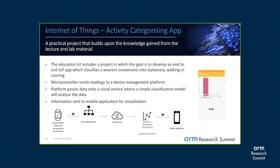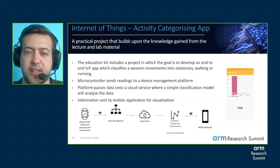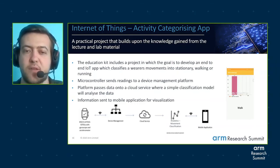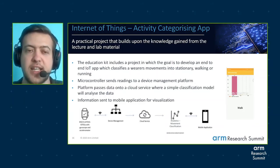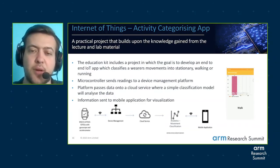One of the best parts of the kit is a hands-on lab that looks into developing an end-to-end IoT system, from a development board all the way to a mobile application. The app is designed to categorize activities such as walking, running, or being stationary. The development board monitors movement and sends this data to a device management platform. From there it is sent to a cloud service where a simple classification model is run on the data to determine whether the user is walking, running, or stationary, and then sent to the mobile app and displayed to the end user in a visualized format.